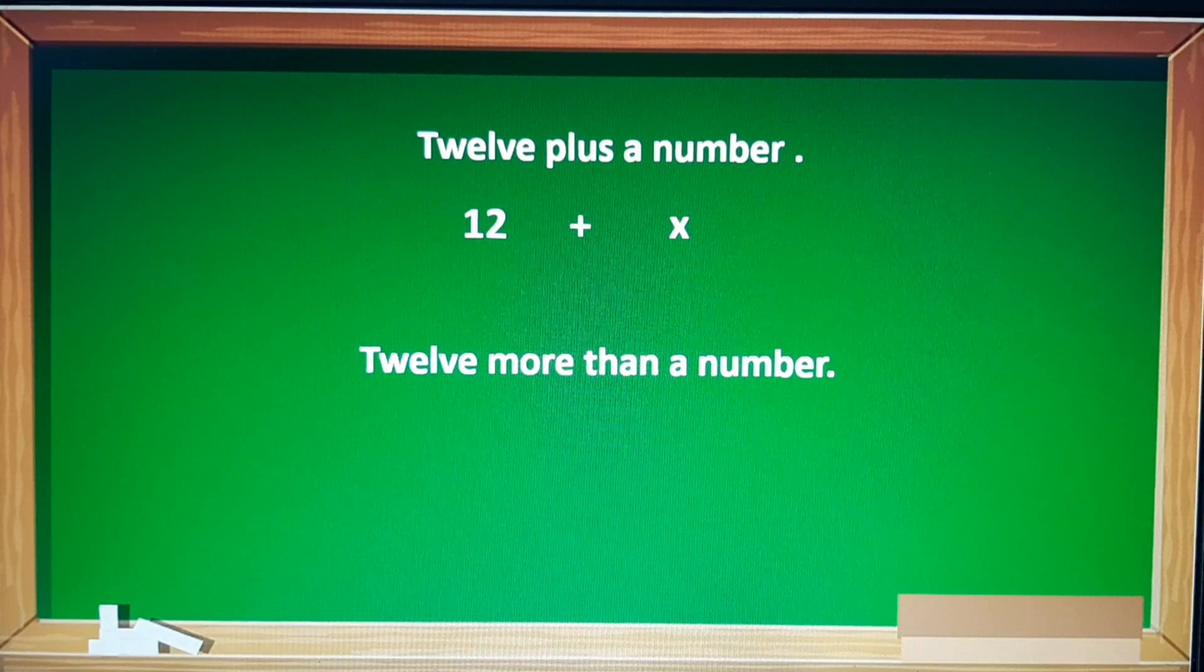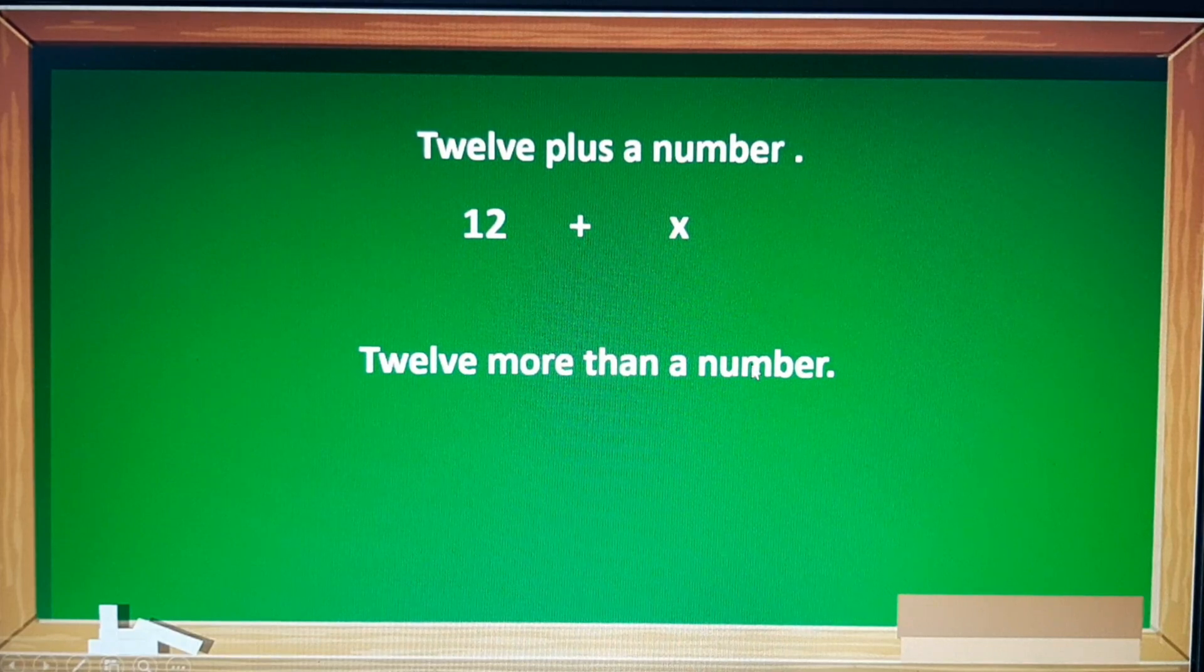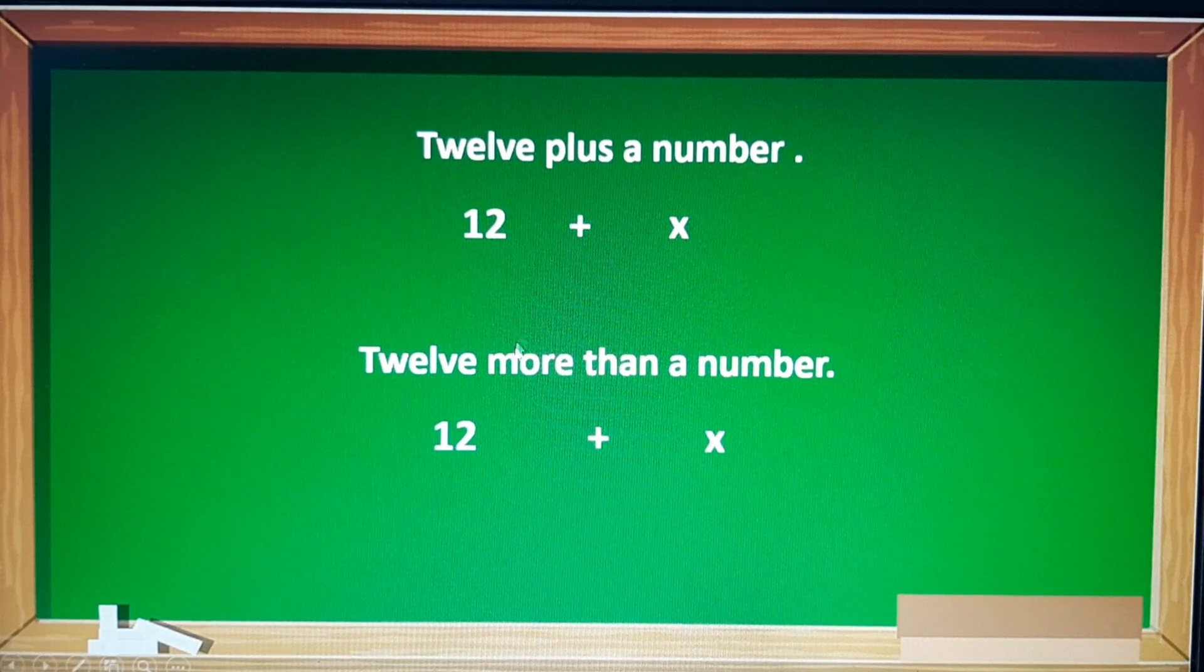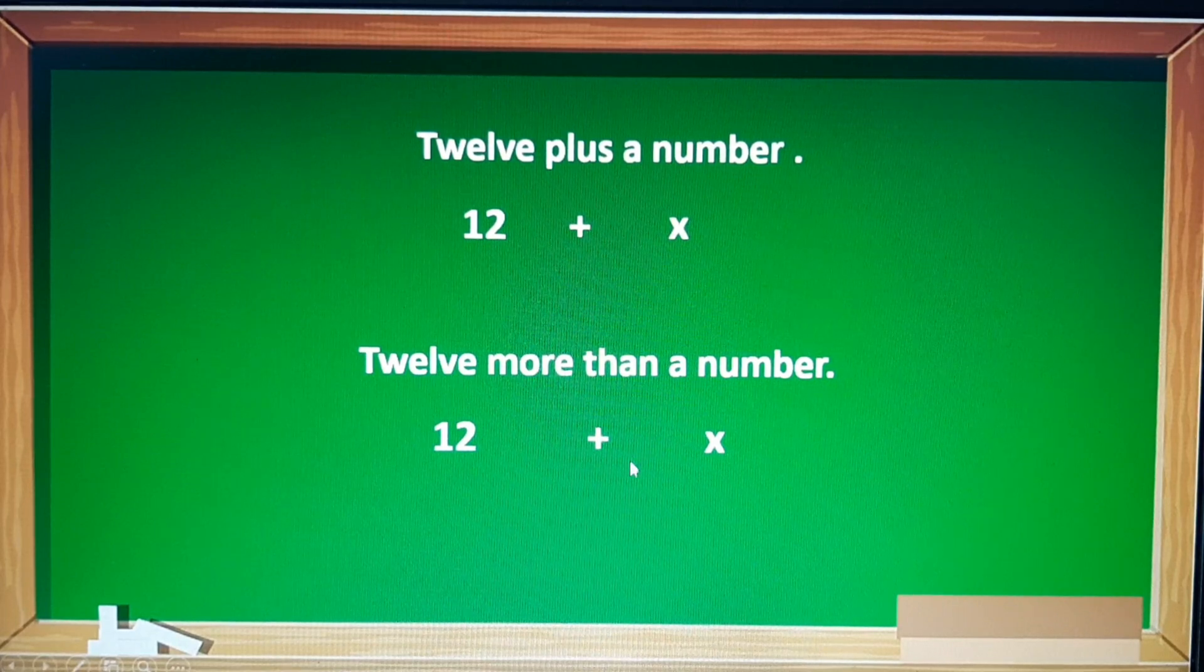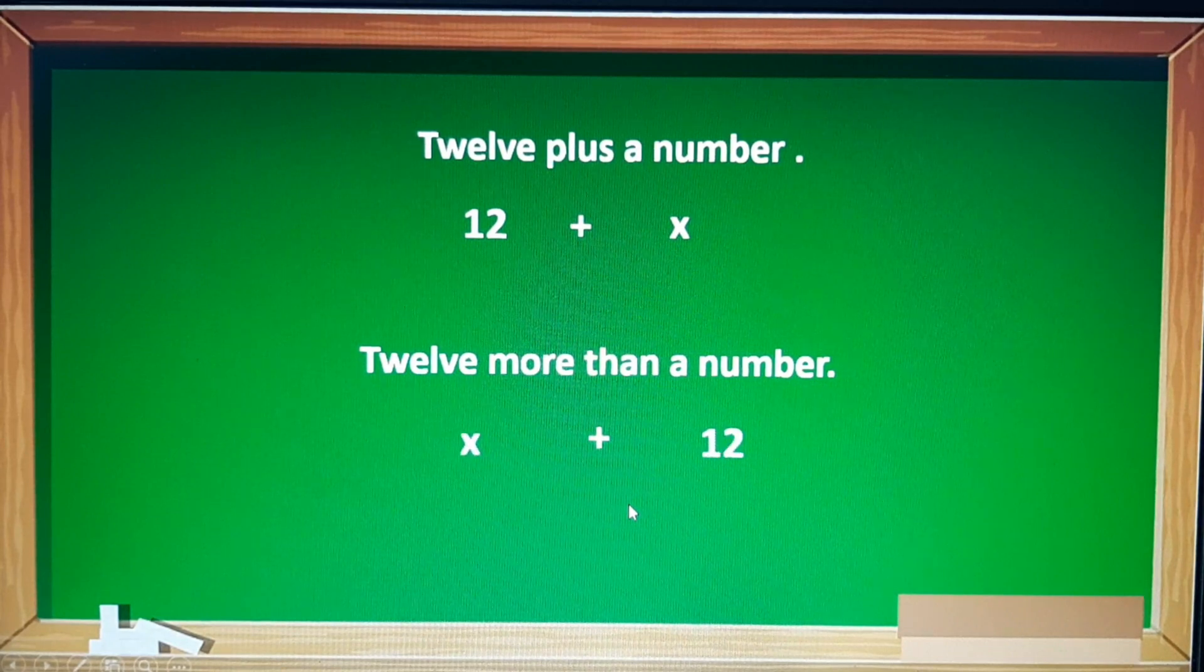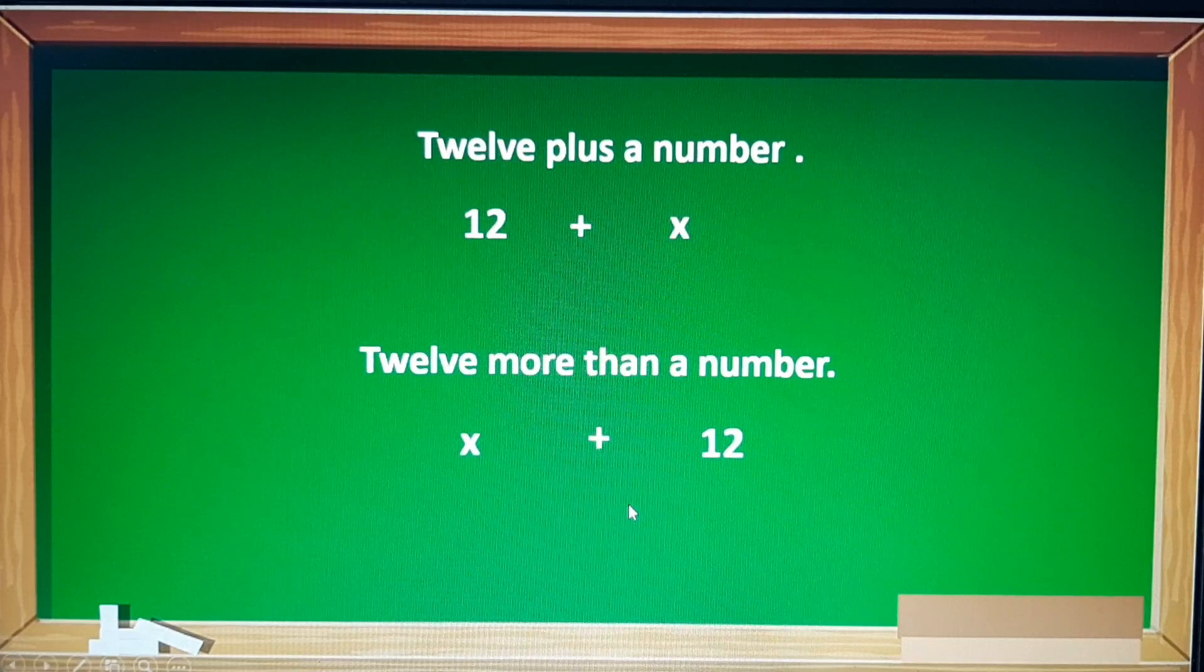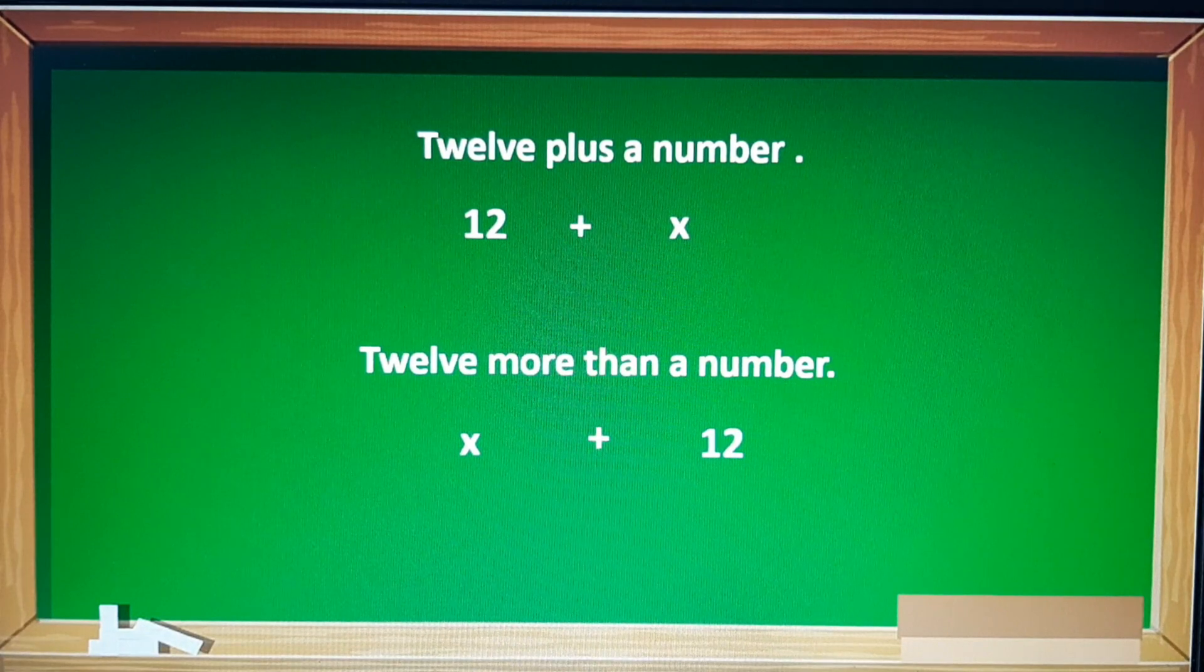For 12 more than a number, the word 'than' means we're going to switch 12 and a number. So if we are going to translate this literally, this will become 12 plus x, more than, because it is for addition. But the word 'than' means we're going to switch position like this. Because 12 more than a number means that 12 is being added to x. So okay lang naman na magkabaliktad sila kasi commutative naman sila. Pero pagdating sa subtraction kasi, iba na yun.